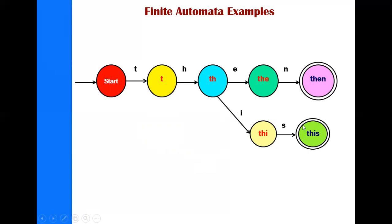Every day when you Google things, whatever string you give is being matched with different combinations from the dictionary. This is one of the applications of finite automata — we call it string matching.